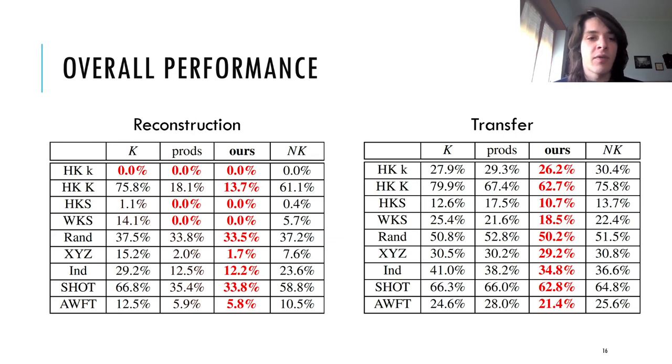What we see from this table is that the orthogonalized eigenproducts are able to overcome even the extended, the large eigenbasis, and we can see this especially on the heat kernel and the SHOT descriptor for the reconstruction task, and the heat kernel and the AWFT descriptor for the transfer task.